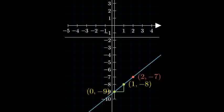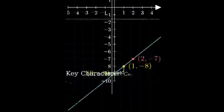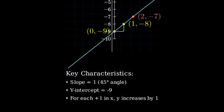Let's review the key characteristics of our line. The slope of 1 means our line rises at a 45-degree angle, and the y-intercept of negative 9 tells us where the line crosses the y-axis. Notice the pattern. As x increases by 1, y always increases by 1 as well.